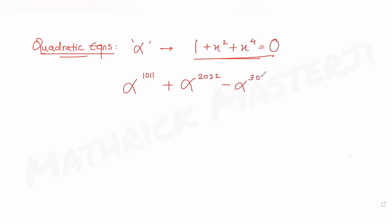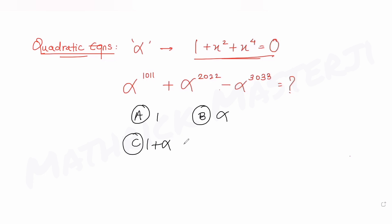We need to find the value of this entire expression. The answer choices given to us are: 1, alpha, 1 + alpha, and 1 + 2*alpha. We need to figure out which one of these answer choices is correct.